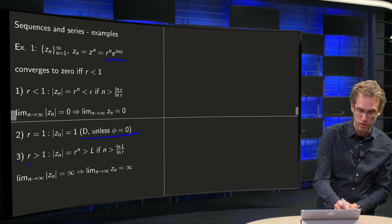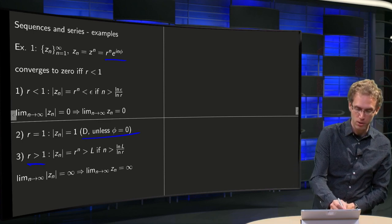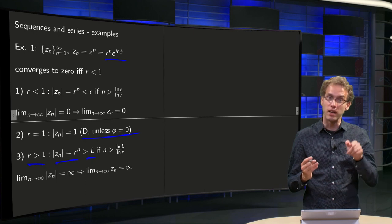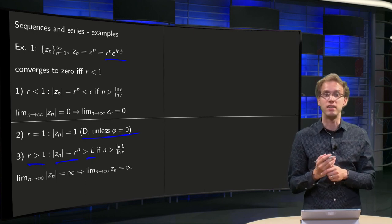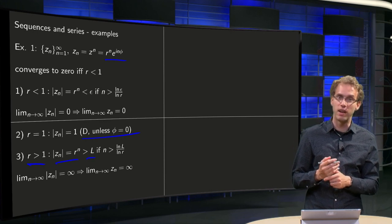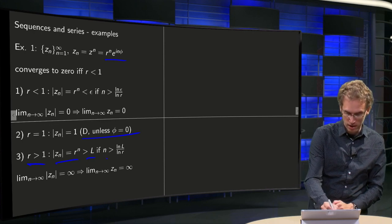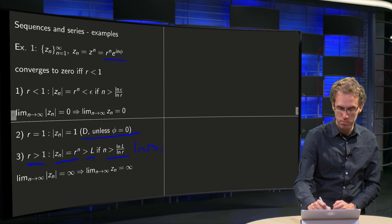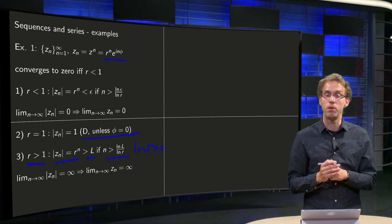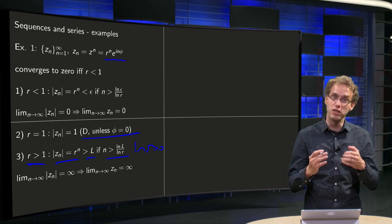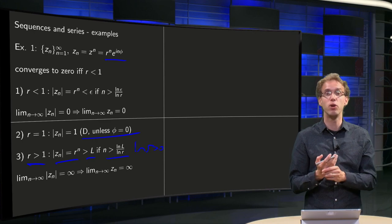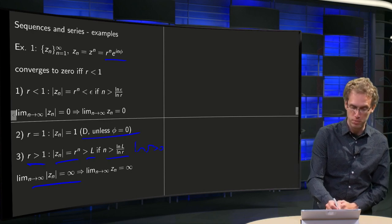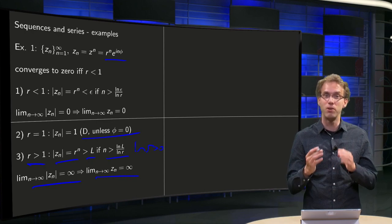Third and last: if r is bigger than 1, then the norm of z_n equals r to the power n, and you can get it bigger than any L. Taking the natural log on both sides gives n times ln(r) bigger than ln(L), or n bigger than ln(L) divided by ln(r). The inequality sign does not change because ln(r) is bigger than 0 when r > 1. So you can get the norms of your sequence as big as you like; as n goes to infinity the norms go to infinity, and the complex numbers go to infinity as well — divergence in this case.